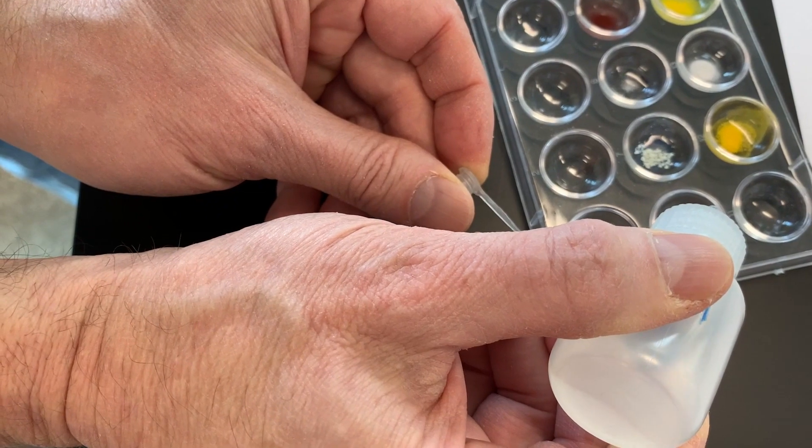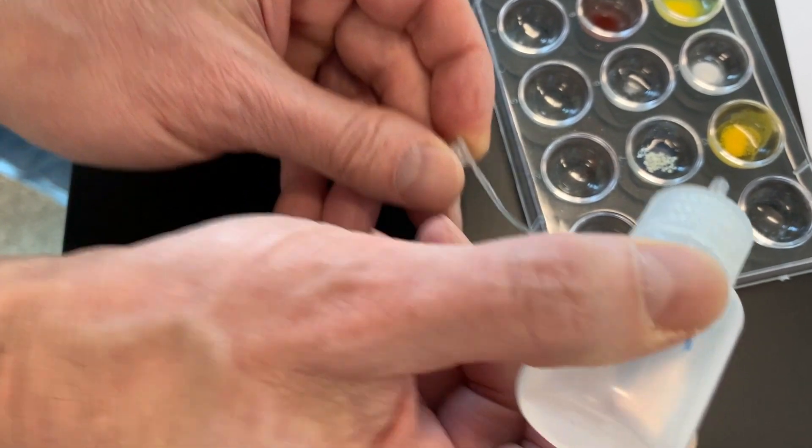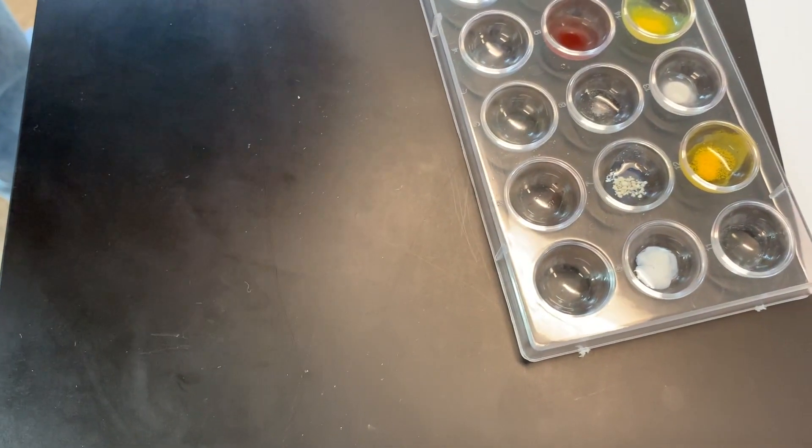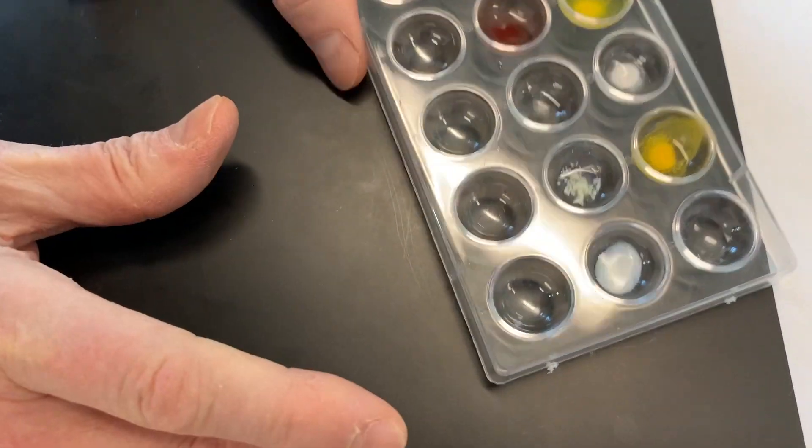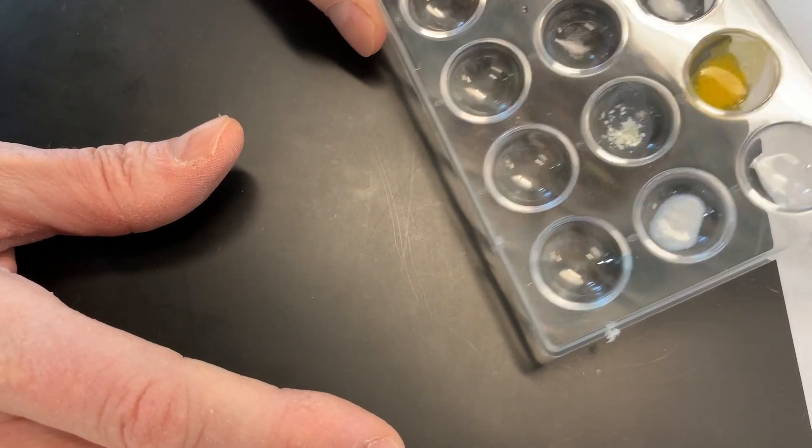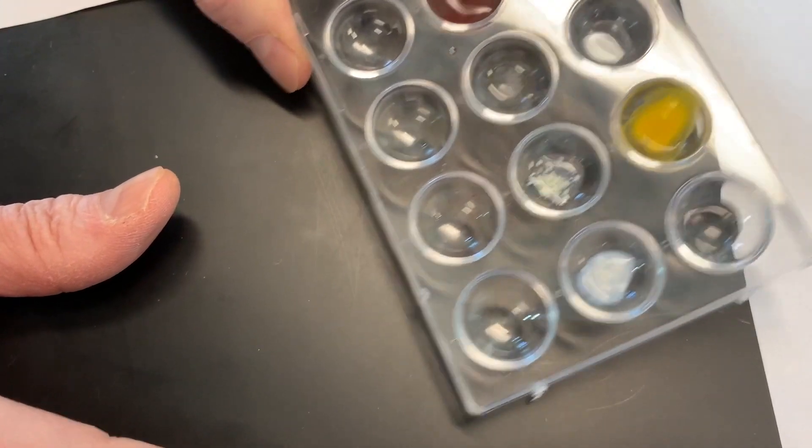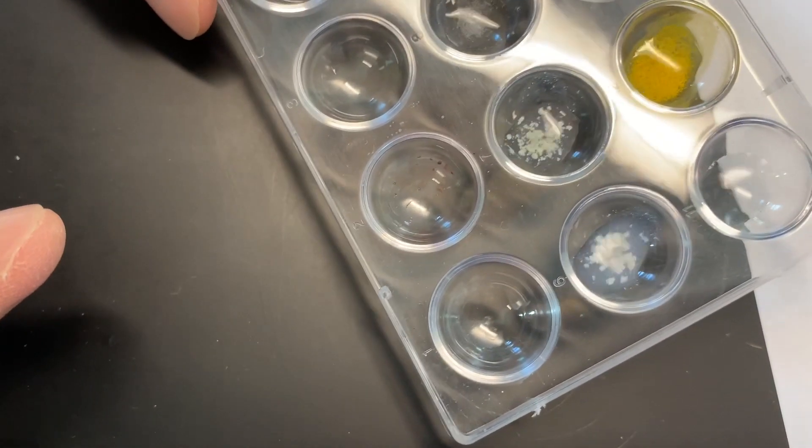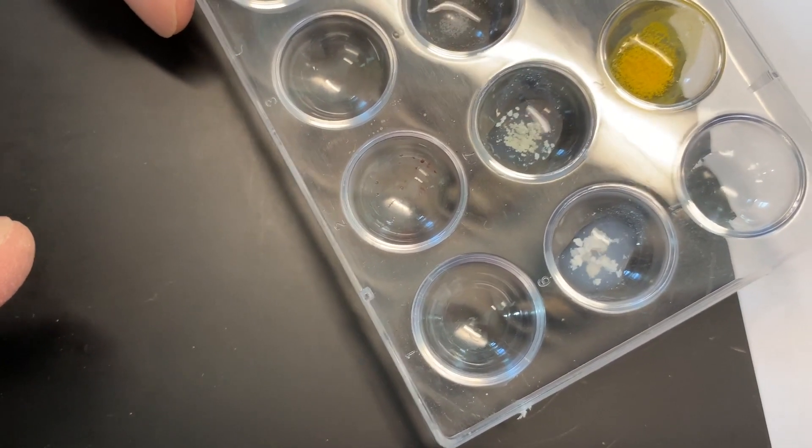Now for the two drops of potassium chloride. It quickly coagulates into this clumpy white stuff and the remaining solution is colorless.